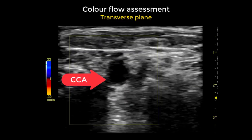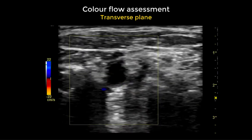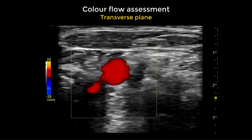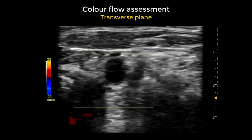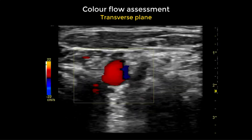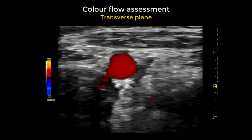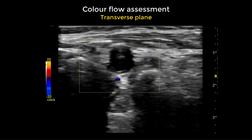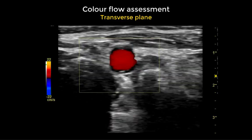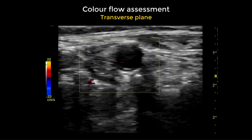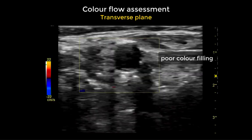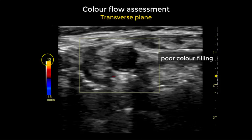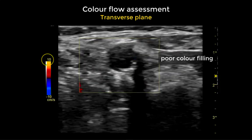We start the assessment using colour flow of the common carotid artery in transverse mode. We optimize the mode first, reduce the size of the box, keep the box straight, and begin assessment of the common carotid artery. We move the transducer up towards the bifurcation and note that there is not good colour filling despite lowering the scale.